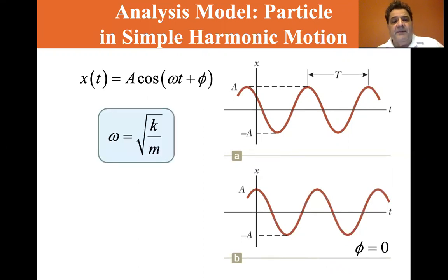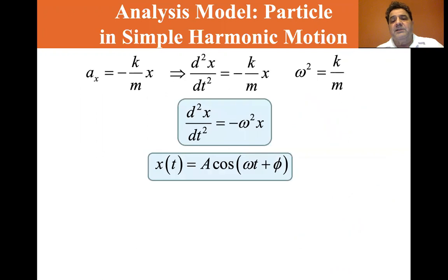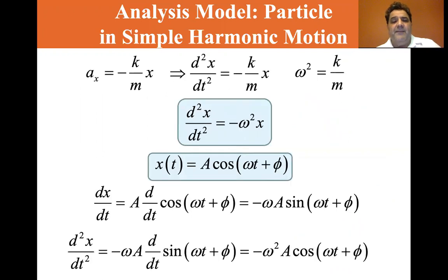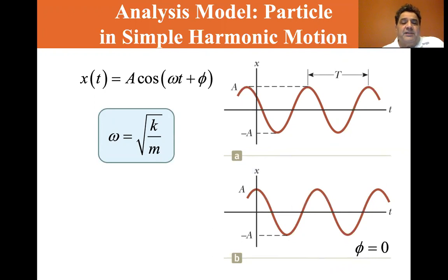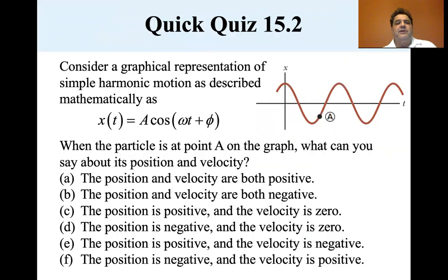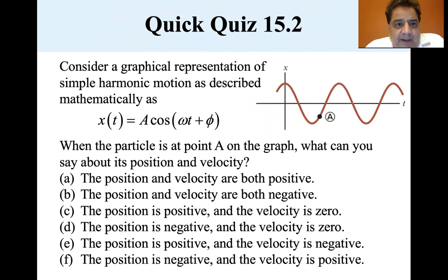Since omega squared equals k/m, omega is equal to the square root of k/m, where k is the spring constant and m is the mass. Consider a graphical representation: simple harmonic motion is described mathematically as x(t) = A cosine(ωt + φ).